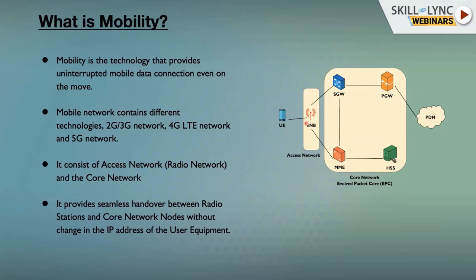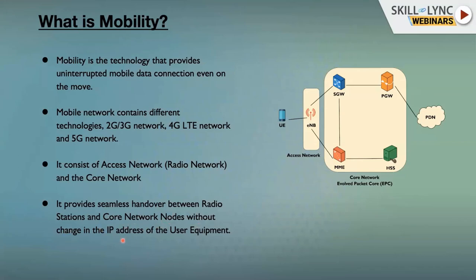We can perform a handover from one eNodeB to a different eNodeB. Consider the UE is traveling from Bangalore to Chennai. In Bangalore, for the Karnataka circle, there could be a dedicated serving gateway, MME, and PGateway. If the UE is moving to a different state, it can also change the SGateway and MME even without changing the IP address. The PGateway cannot be changed because it is hosting the IP address — if it changed, the UE would have to disconnect and reconnect. So there is IP address continuity for the UE: seamless handover between radio stations and core network nodes without changing the IP address.